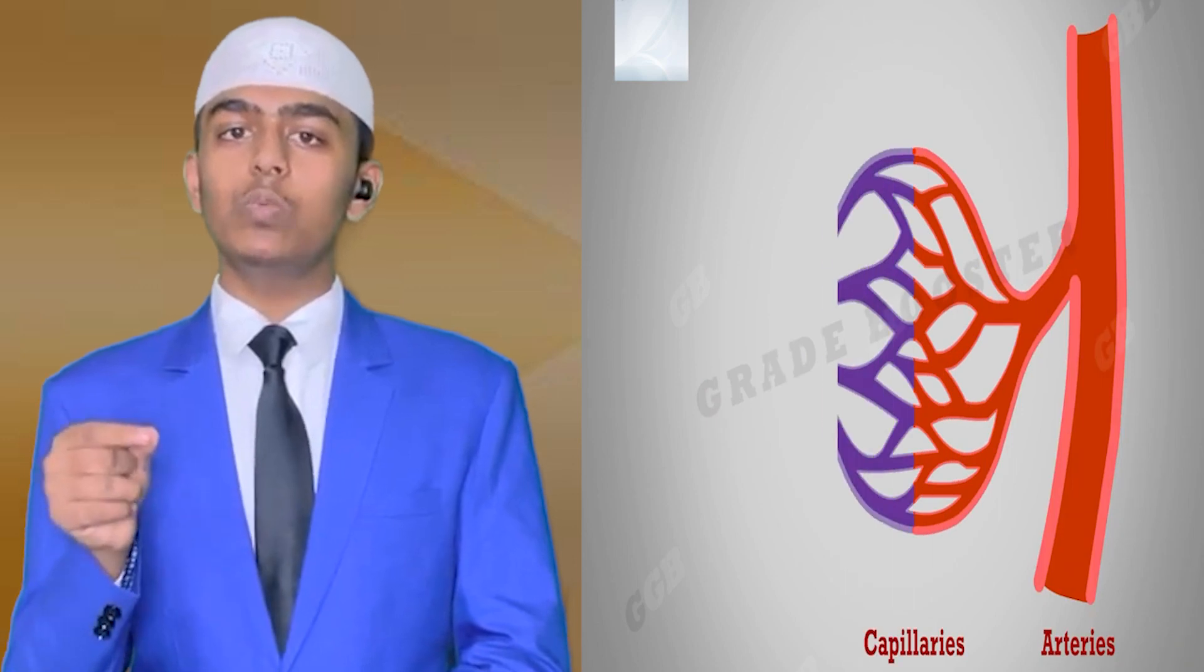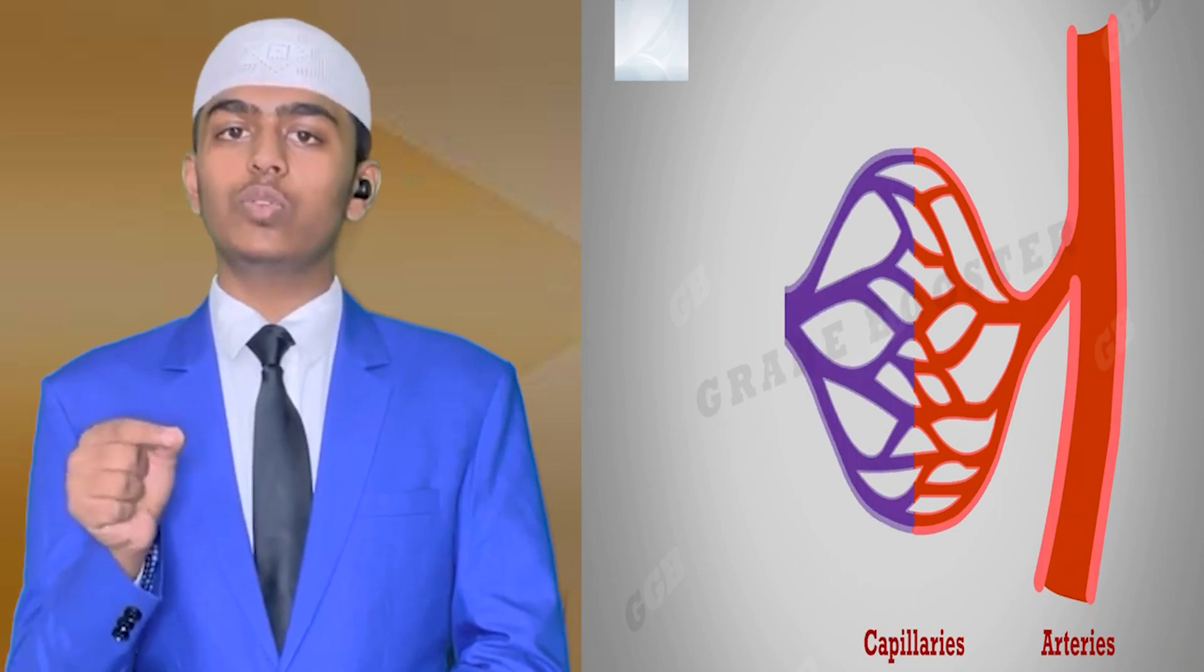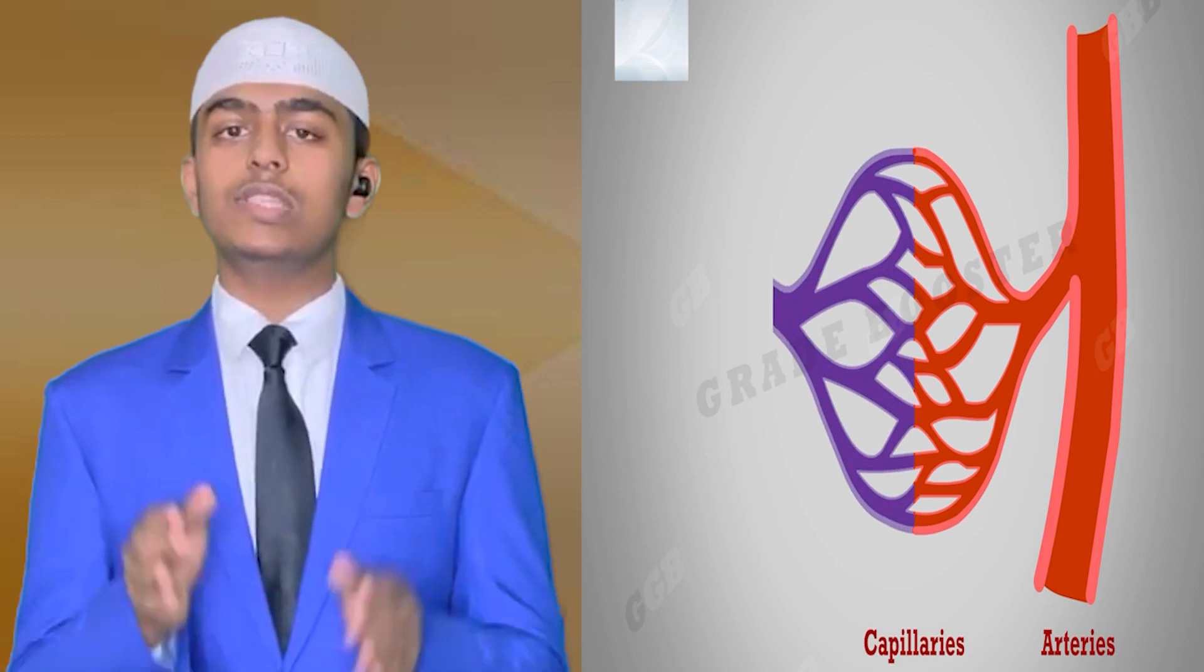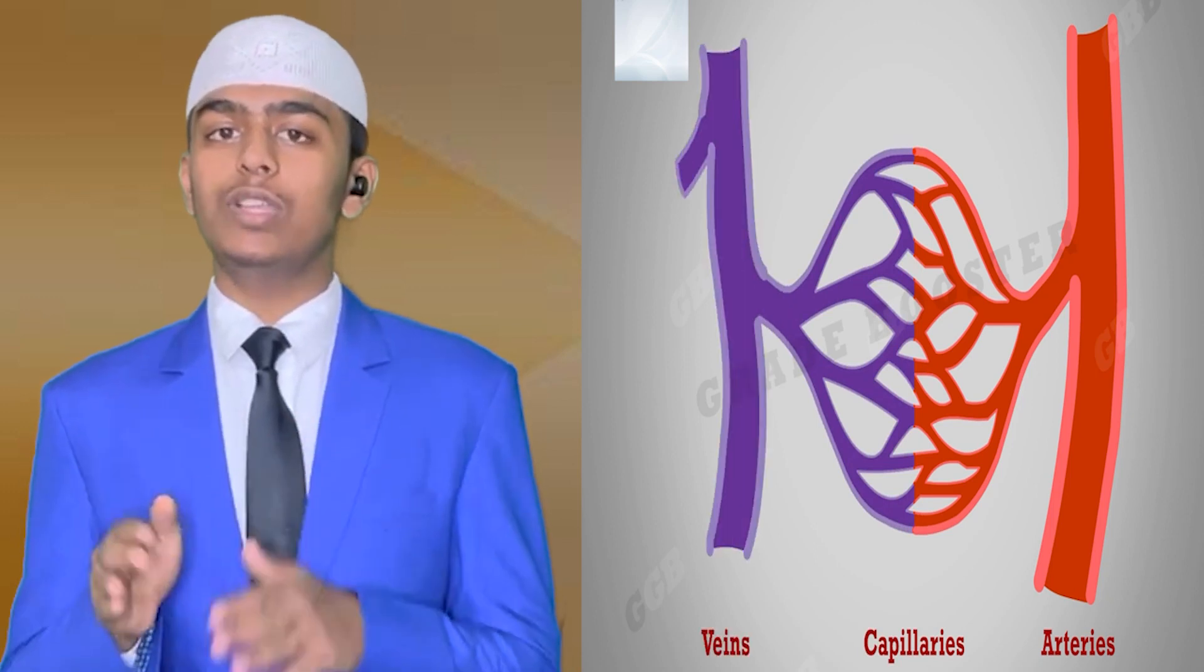The arteries branch into thin vessels called capillaries to reach the cells for the supply of materials. These capillaries rejoin at the other end to form veins.